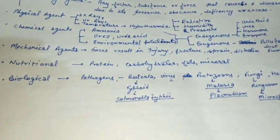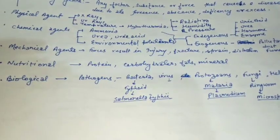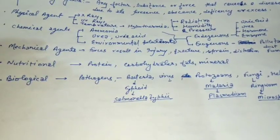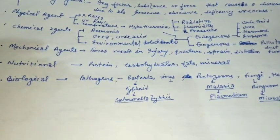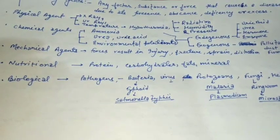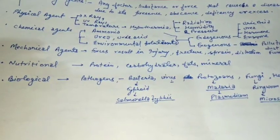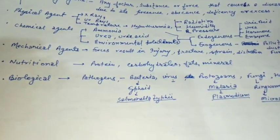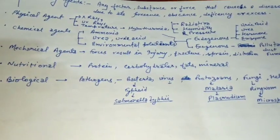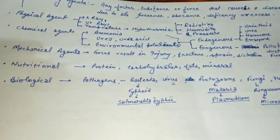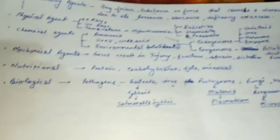If we talk about chemical agents, chemical agents include endogenous chemical agents — chemicals present within our own body — and exogenous chemical agents, which come from outside. The presence or absence of these chemicals can cause disease.